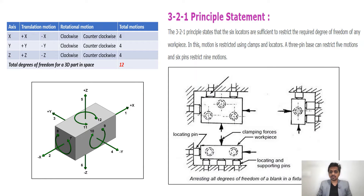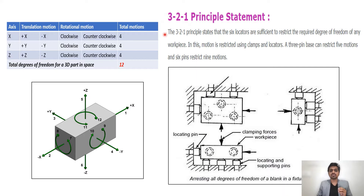Let's understand this with an example. Here we have a part shown from the front view, top view, and side view. The 3-2-1 designation means we have 3, 2, and 1 pins — totaling 6 pins. If we use 6 locating pins, we can restrict 9 out of 12 motions. This is the 3-2-1 principle: using 6 locating pins to restrict 9 of 12 motions.